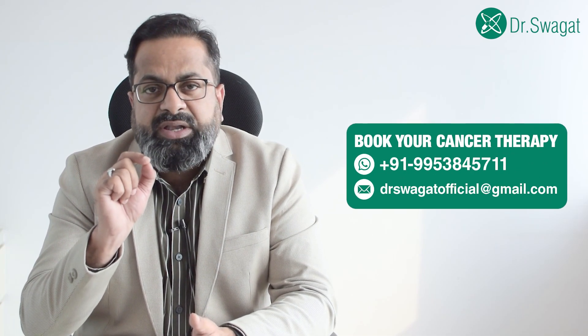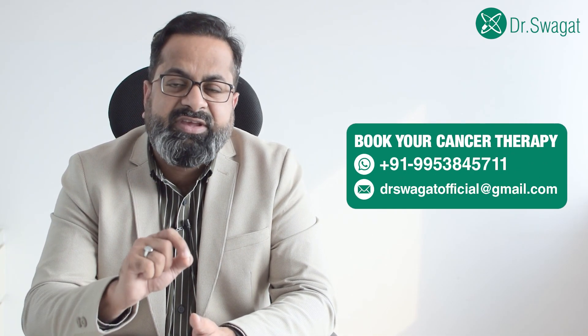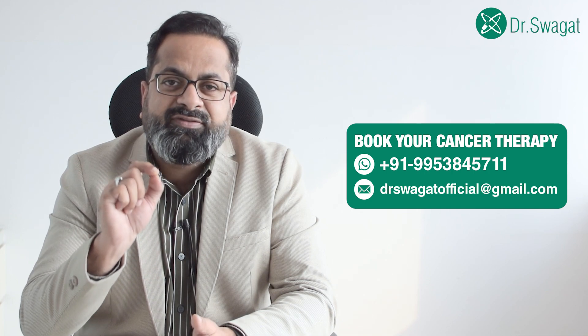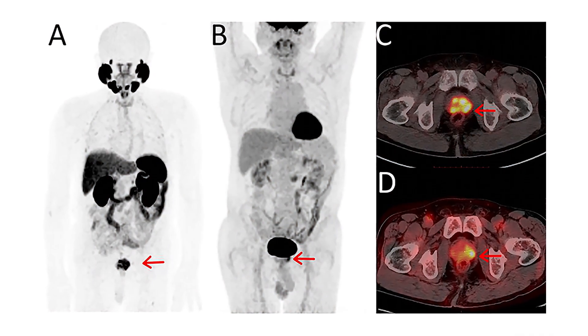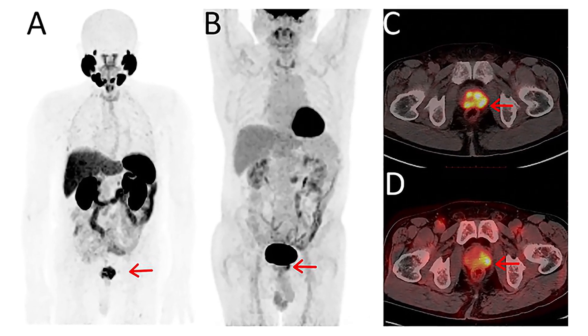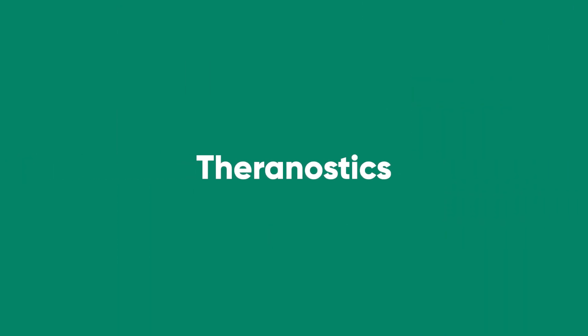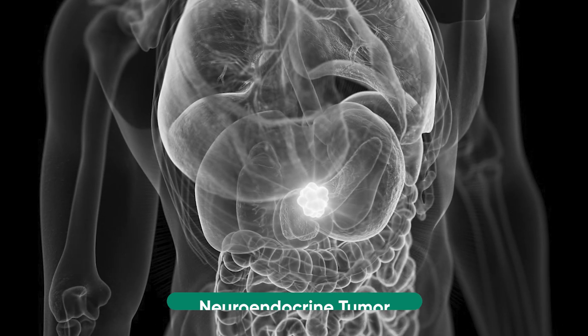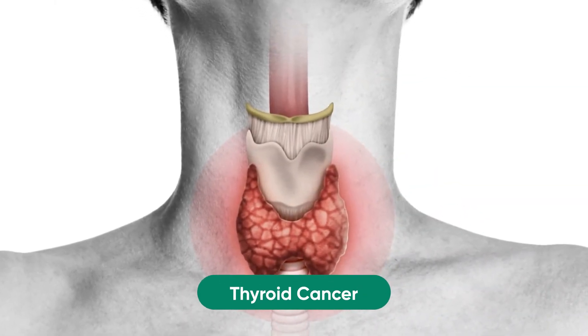The concept of Theranostics is: we treat the disease that we see, and we see what we treat. That means whatever disease or lesion we see on a molecular PET scan, we treat only those lesions. There are cancers like prostate cancer, neuroendocrine tumor, and thyroid cancer which are treated through Theranostics in nuclear medicine.